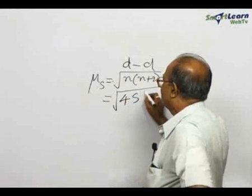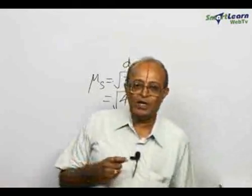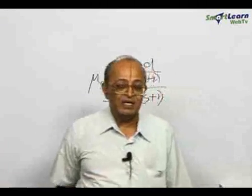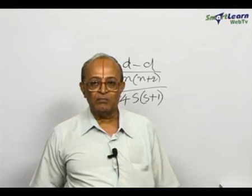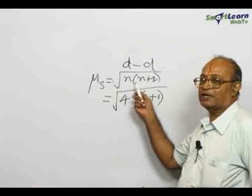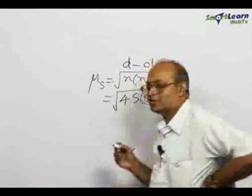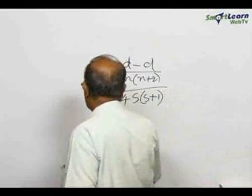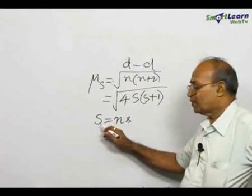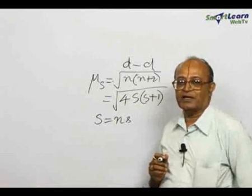There is also another expression which gives the same result: μs (spin-only magnetic moment) is equal to √(4S(S+1)), where capital S is known as the total spin. From this expression you can get √(n(n+2)). For each electron the spin is half, so capital S equals n times small s, where capital S is the total spin, small s is the spin of one electron, and n is the number of unpaired electrons.